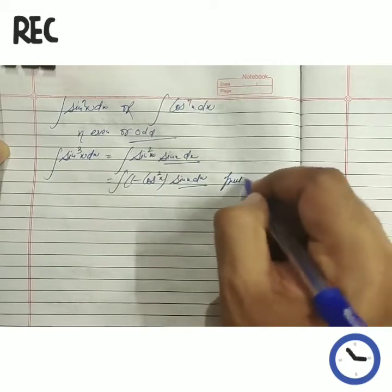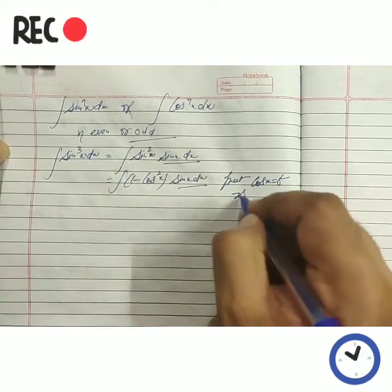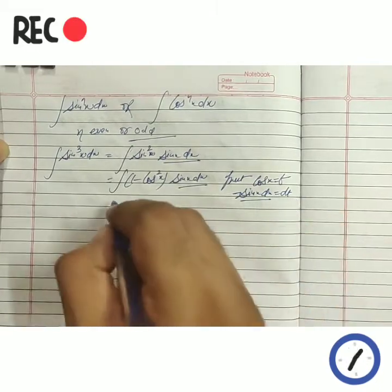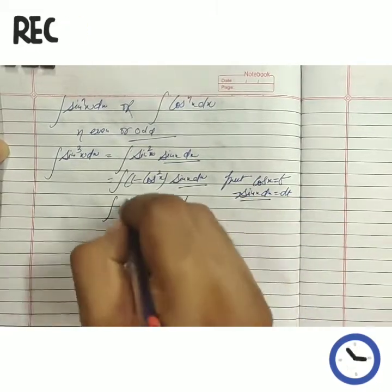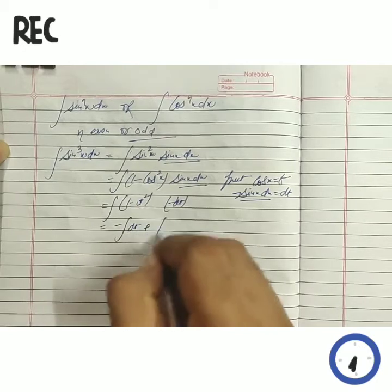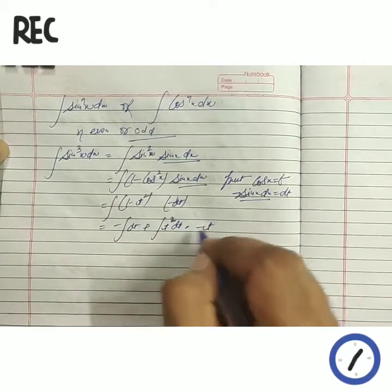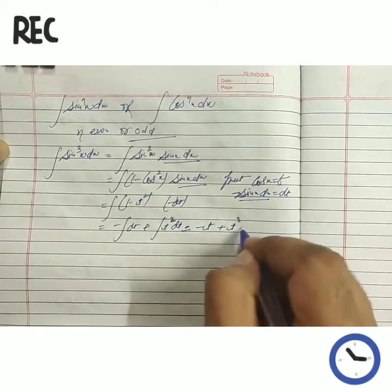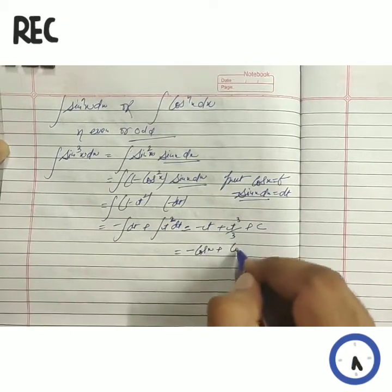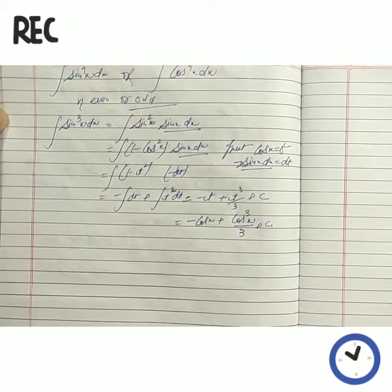Now we are going to use substitution method: let cos x = t. The derivative of cos is minus sin x dx = dt. But we are having only sin x dx, so shifting minus to the right-hand side, it becomes minus dt. This becomes (1 − t²). Opening the bracket we get minus dt plus t² dt. By the power rule, integration becomes minus t plus t³/3 + C. So overall, using the value of t as cos x, we get the final answer — the integration of sin³x using substitution method.